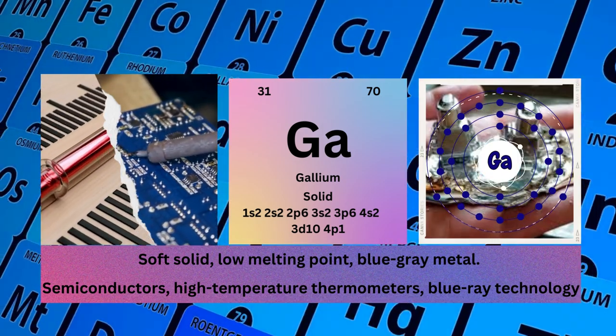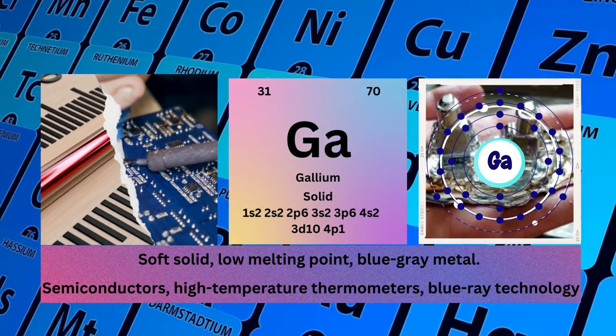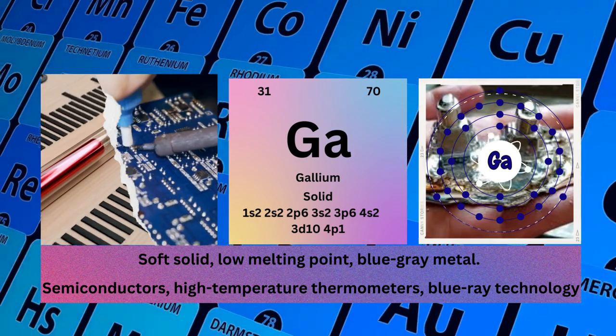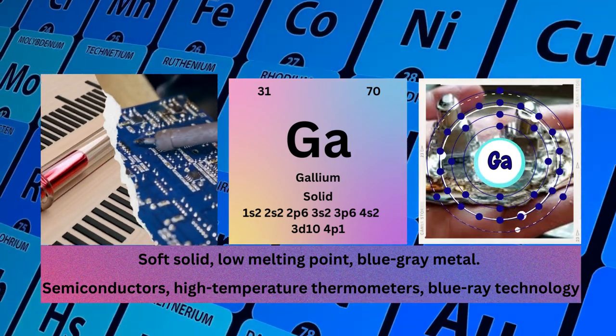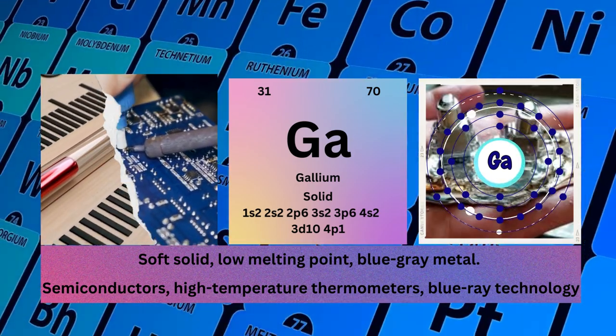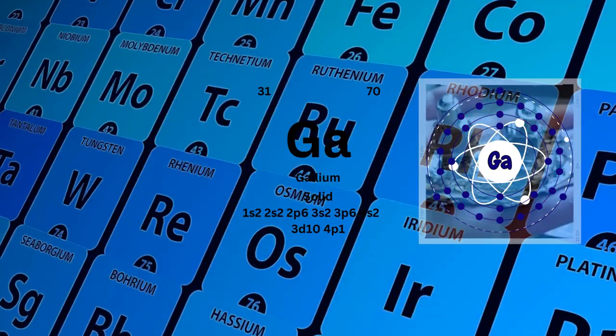Physical properties: soft solid, low melting point, blue-gray metal. Gallium used as semiconductors, high-temperature thermometers, and blu-ray technology.